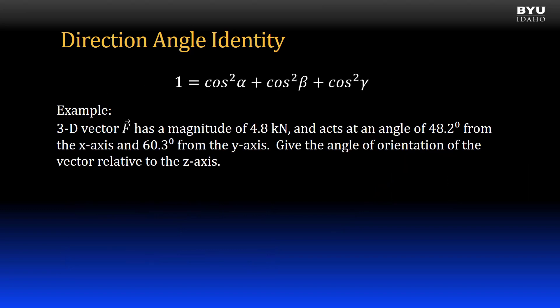A 3D vector f has a magnitude of 4.8 kilonewtons, and acts at an angle of 48.2 degrees from the x-axis and 60.3 degrees from the y-axis. Give the angle of orientation of the vector relative to the z-axis. The 48.2-degree angle is alpha. The 60.3-degree angle is beta. We need to find gamma. We will use the direction angle identity.